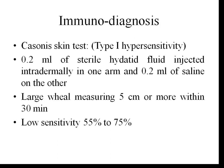The Casoni skin test, now obsolete, is a type 1 hypersensitivity reaction against hydatid antigens. In this test, 0.2 ml of sterile hydatid fluid is given intradermally into one arm and 0.2 ml of saline into the other. Appearance of a large wheal measuring more than 5 mm within 30 minutes indicates a positive test. The drawback is low sensitivity of around 55–75% and inability to differentiate present infection from past infection.